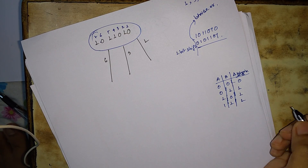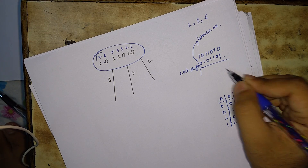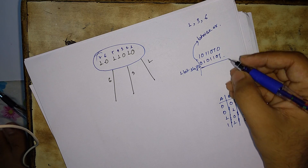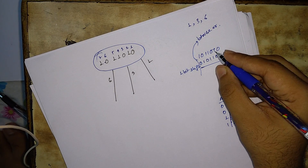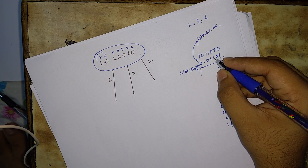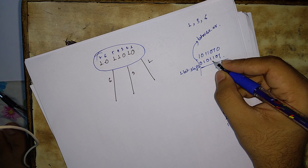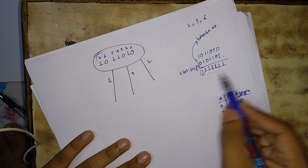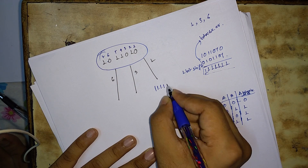Now let us perform the bitwise OR: zero OR one gives one, one OR zero gives one, zero OR one gives one, one OR one gives one — and so on for the rest. We get seven ones: one, two, three, four, five, six, seven — all seven positions are one.